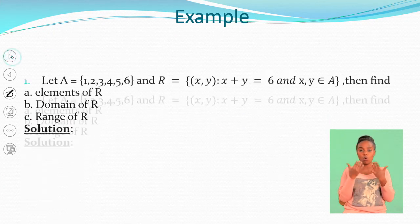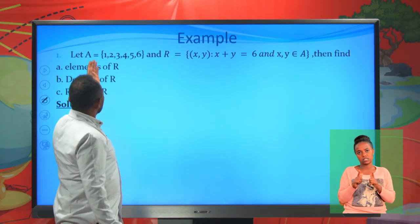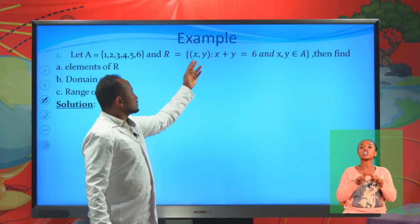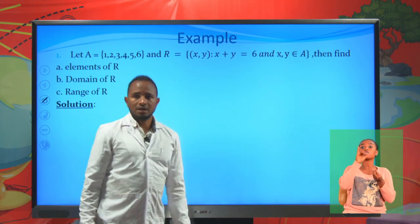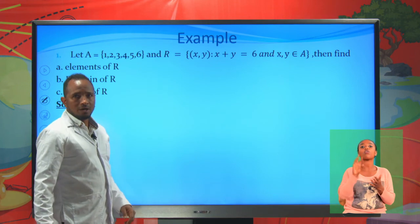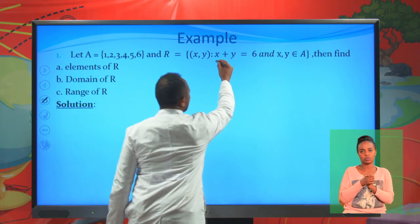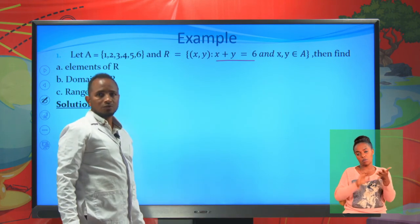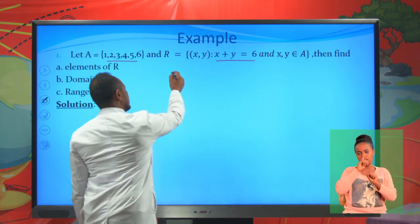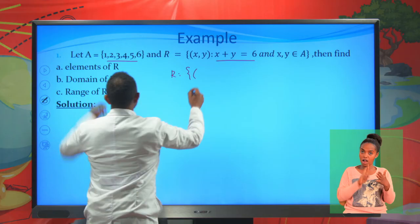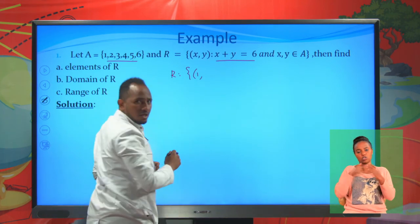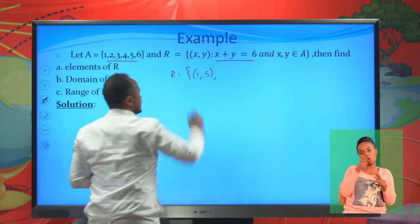Let A = {1, 2, 3, 4, 5} and R be a relation of (x, y) such that x plus y equals 6, where x and y are taken from A. Find the elements of R. To list the elements of R: if x=1, then y must be 5, which is in A, so (1,5) is an element. If x=2, y=4, so (2,4) is an element. If x=3, y=3, so (3,3) is an element.